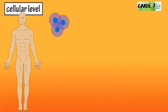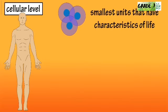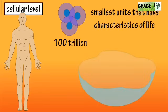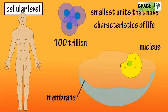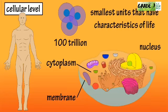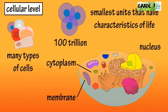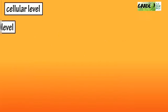The cellular level is next. Cells are the smallest unit in the body that shows the basic characteristics of life. It's estimated that the body has around 100 trillion cells. Each cell is made up of a membrane, a nucleus, and a cytoplasm that houses the organelles required for the cell to function properly. There are many different types of cells in the body that perform different functions.